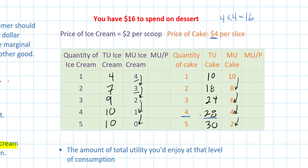The answer is not necessarily. In fact, it's not — the decision should not be based on what provides me with the most utility, rather what provides me with the most utility per dollar. To calculate this, I must determine the marginal utility divided by the price for both cake and ice cream at every level of consumption.